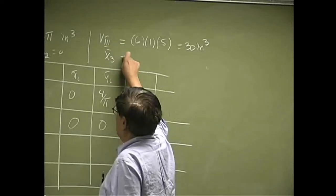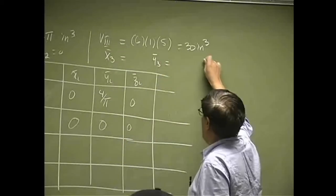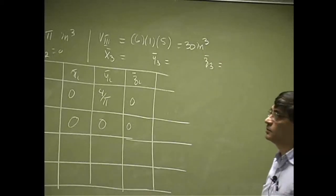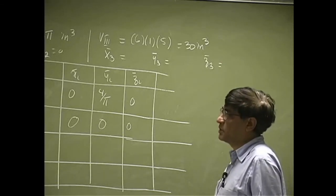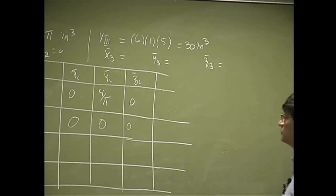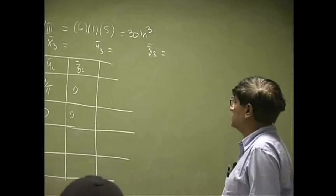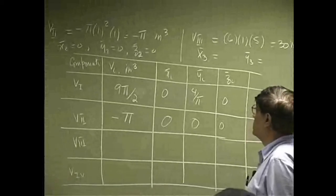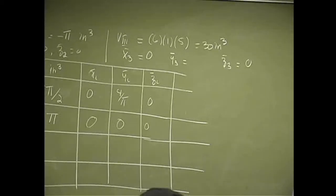Then we need X₃ bar, Y₃ bar, and Z₃ bar. So what happens to those coordinates? X of 3 bar is 0, and Y is minus 2.